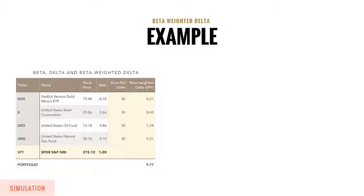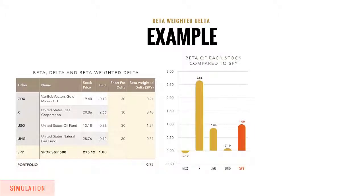If we have a naked put on each one of them, for example, the short put delta might all be the same at 30. But the expected movement of each instrument—GDX, X, USO, and UNG—relative to SPY's movement will change. That's because the relative beta of each stock is either higher or lower than the SPY.